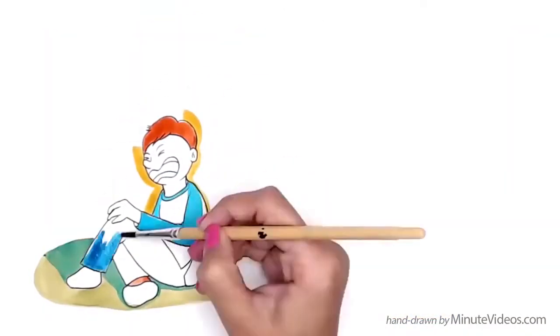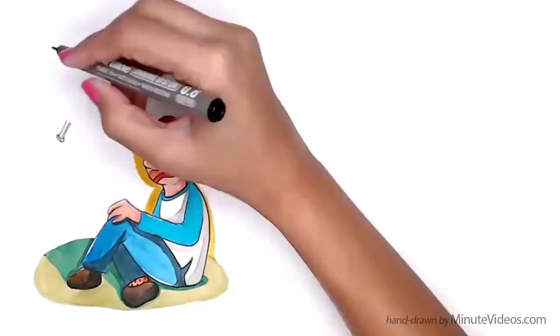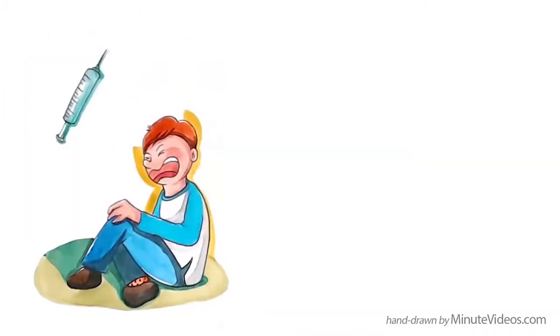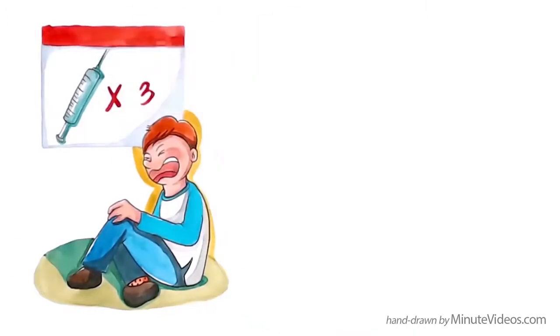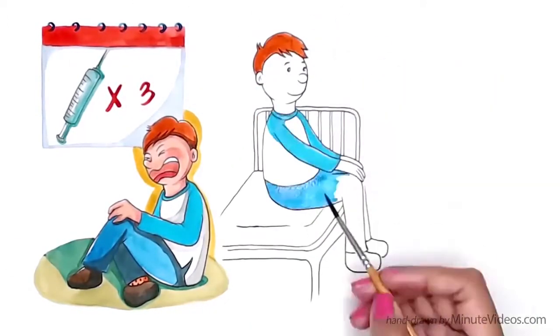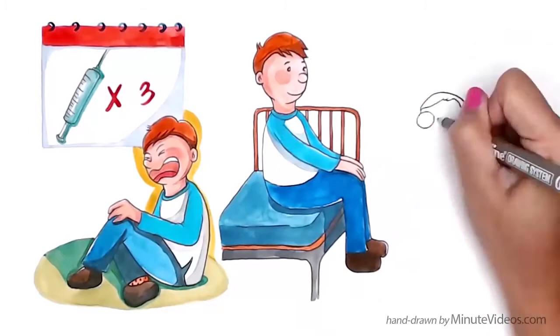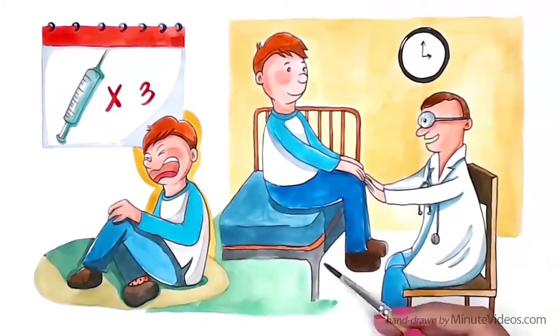A usual course of PRP for arthritis of the knee is three injections over a period of three weeks, plus a follow-up injection after one month. Patients should return for a top-up injection one year after their treatment to prevent the progression of arthritis.